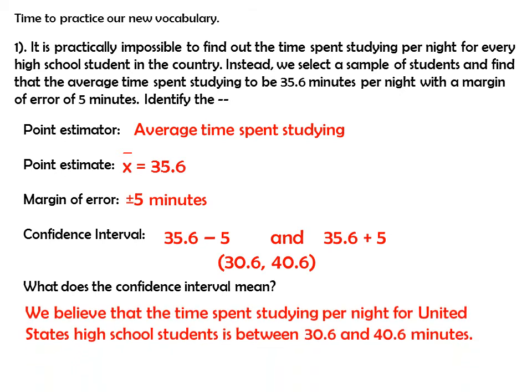This means we believe that the time spent studying per night for United States high school students is between 30.6 and 40.6 minutes. We believe this to be likely. Is this necessarily going to be true? No, but we'll talk more about error later.